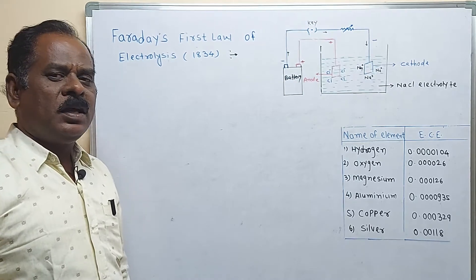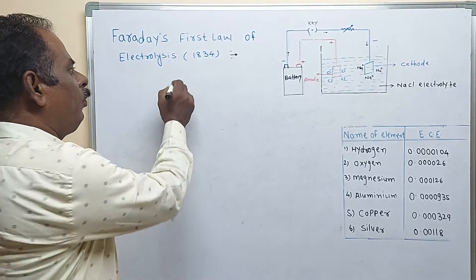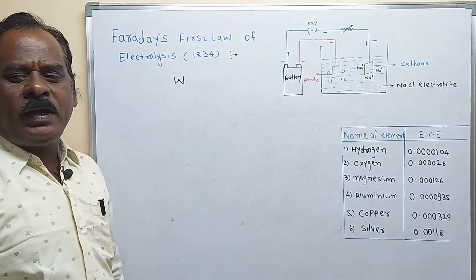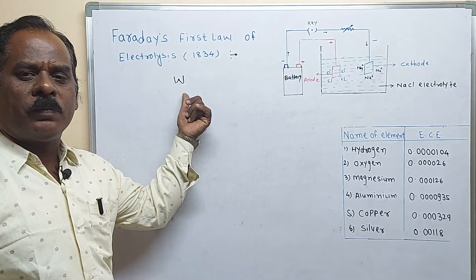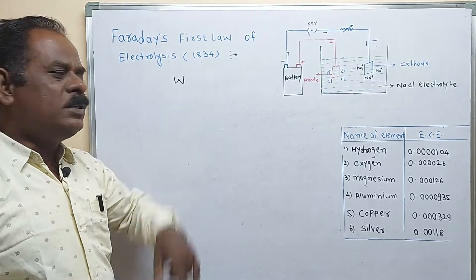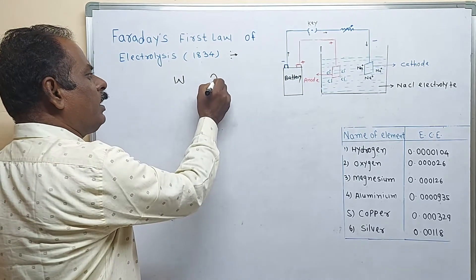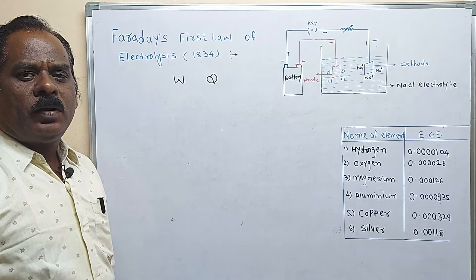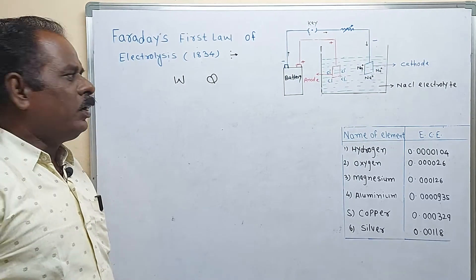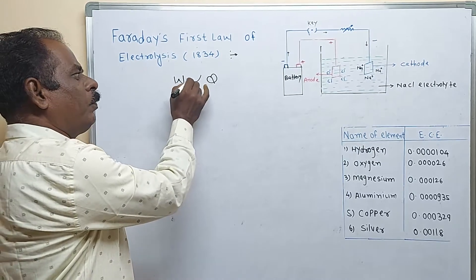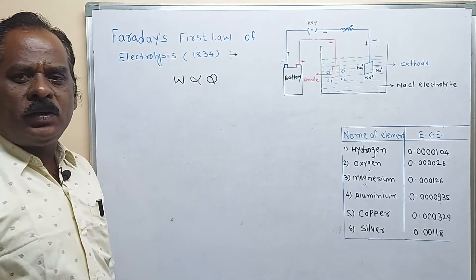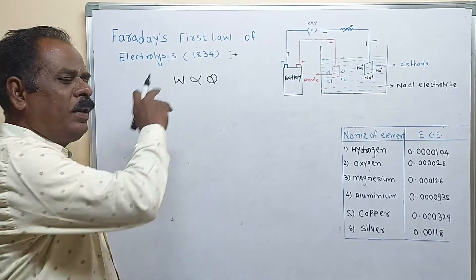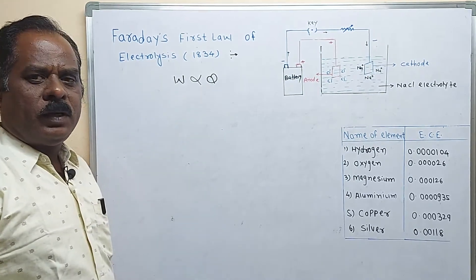How do you write the mathematical relations? Consider W is the weight of substance deposited or liberated on the respective electrode, and Q is the quantity of electricity passed through an electrolyte. According to Michael Faraday's law, W is directly proportional to Q. What is Q here? The quantity of electricity is passed in Coulombs.